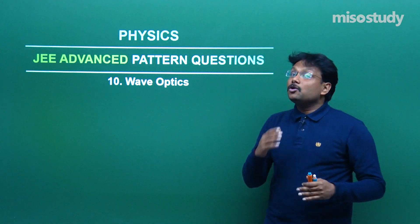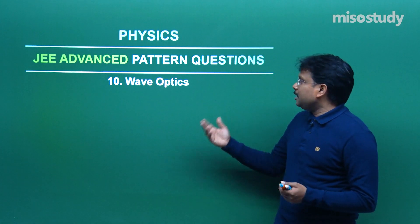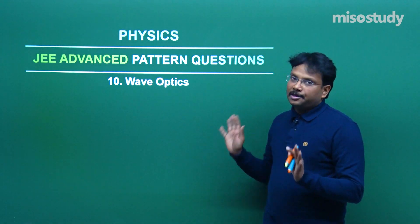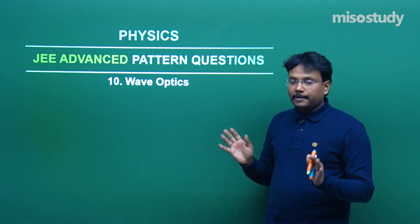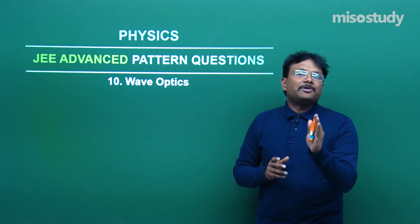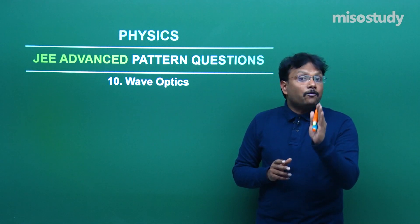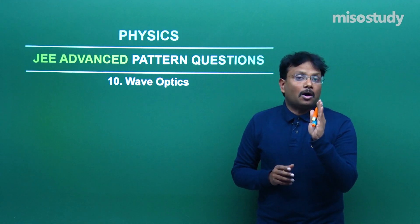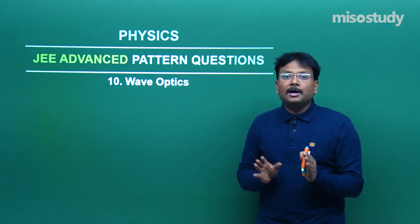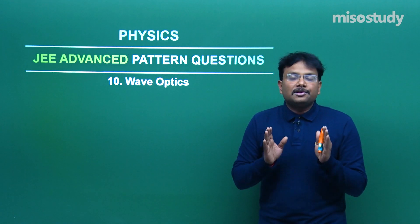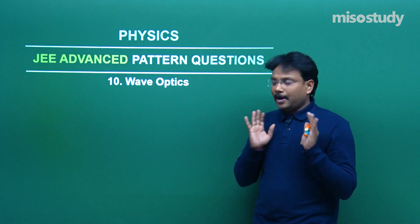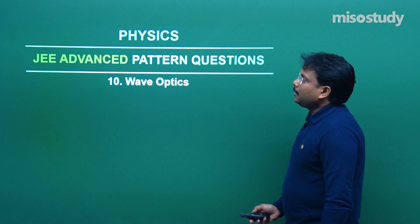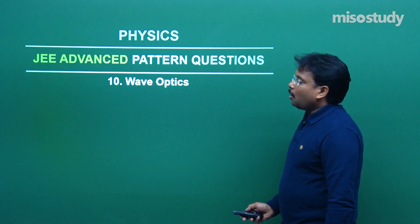If some students are not continuously revising, please watch the previous episode first, then start here. That particular episode is mainly focused upon a very important topic of this chapter: Young's double slit experiment. So let's move to question number 6 onwards.